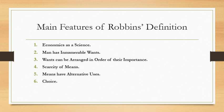Number five, means have alternative uses. Our means are not only limited but also have many uses. They can be used for satisfying any of our many wants. Our means are thus capable of alternative uses. For instance, land can be used for the construction of a house or a factory, a shop, a school, etc. Similarly, all the economic means and resources can be put to alternative uses.